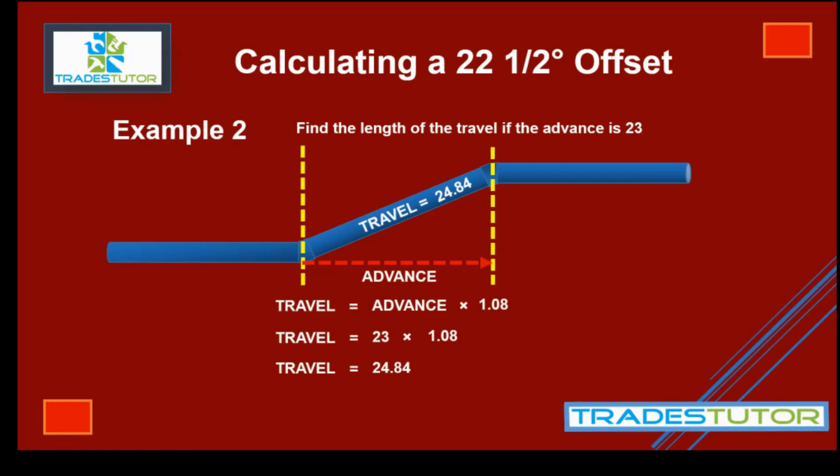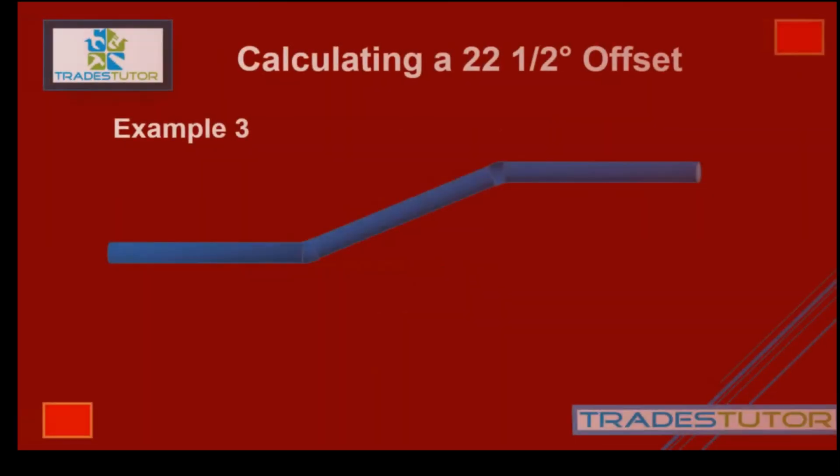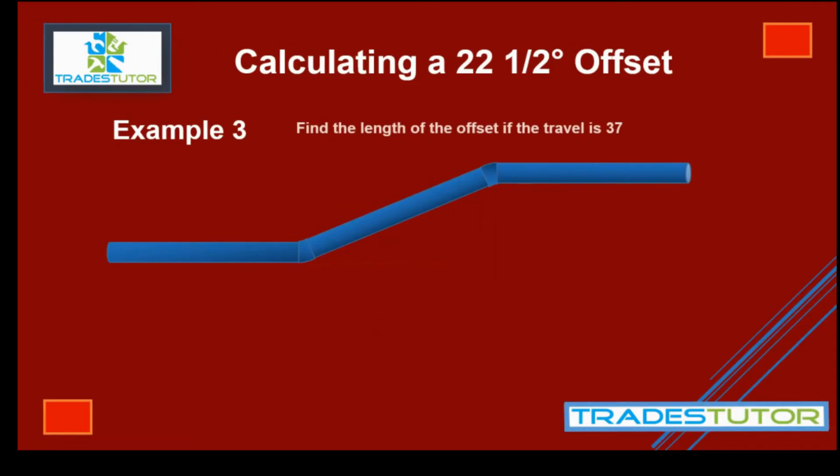Okay, I'm going to go through one more example. It's kind of the reverse now. We're going to try to find the offset given the travel. So the question becomes, find the length of the offset if the travel is 37. So the travel is 37.